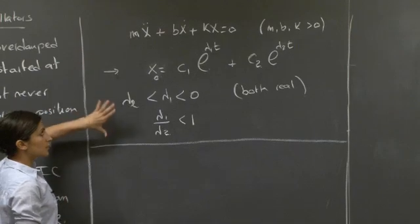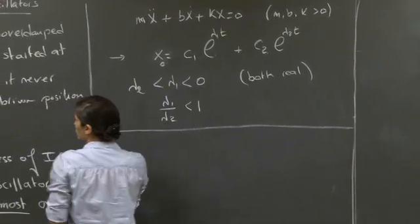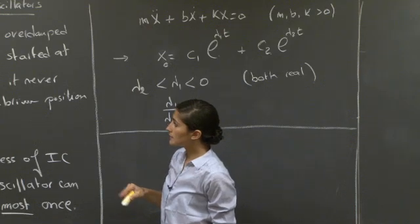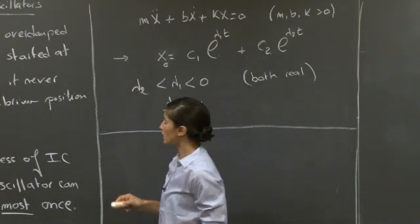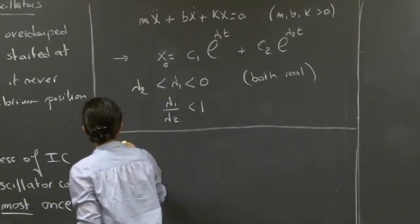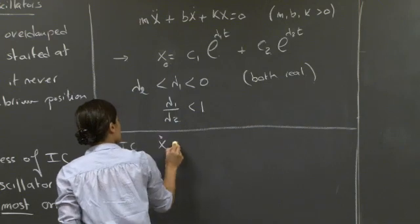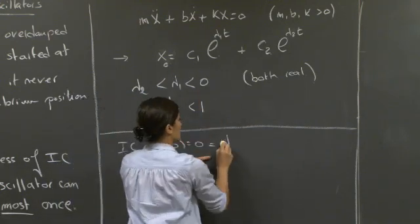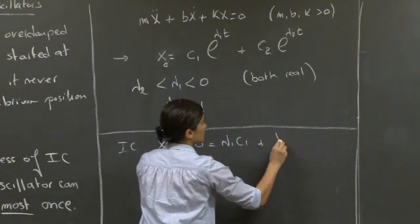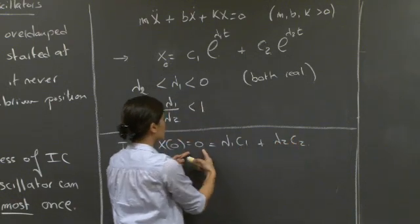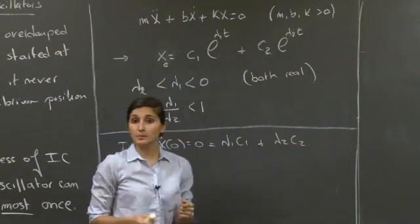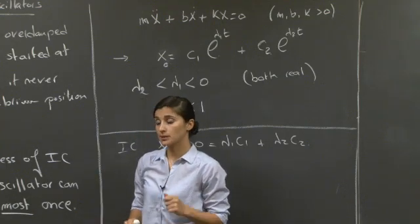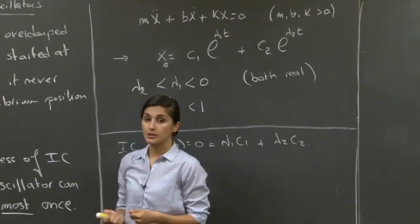This sets up the problem. The question in Part 1 is to show that if we start this system with initial condition x-dot of 0 equals 0, which corresponds to lambda-1 C1 plus lambda-2 C2 equals 0, then the system cannot cross the equilibrium position x equals 0 for t greater than 0.